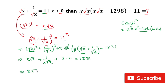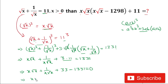So we have: x·root(x) + 1/(x·root(x)) + 3 × 11 = 1331, which gives x·root(x) + 1/(x·root(x)) + 33 = 1331. Moving 33 to the right: x·root(x) + 1/(x·root(x)) = 1298. We can rewrite this as x·root(x) + 1/(x·root(x)) - 1298 = 0.